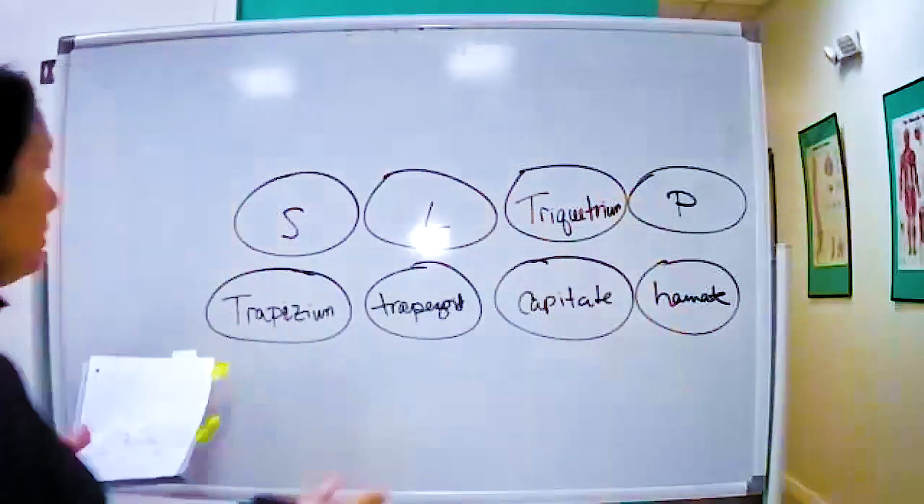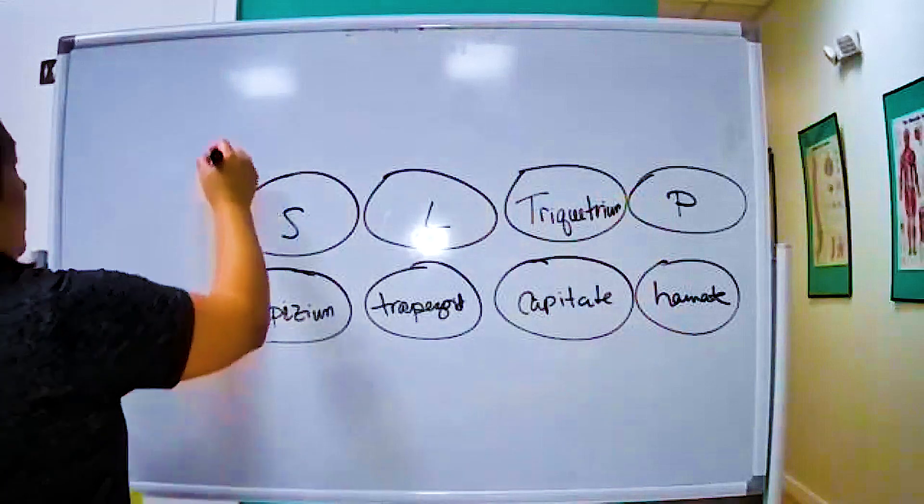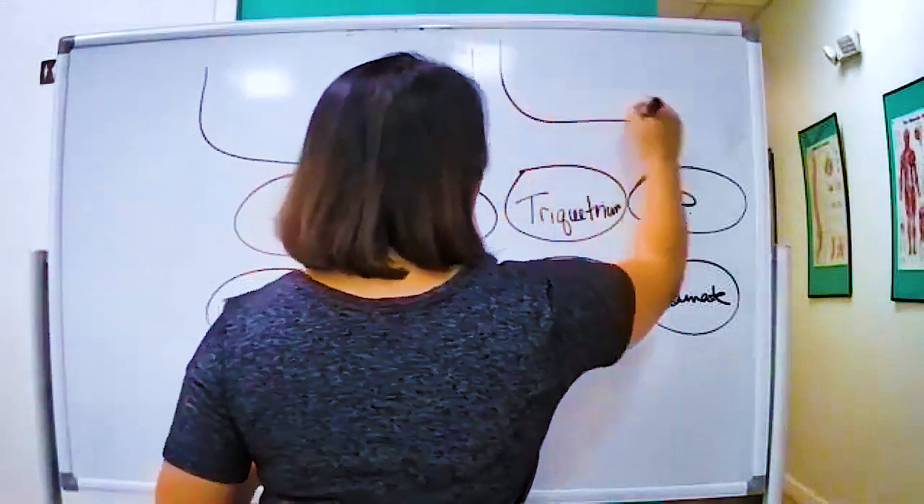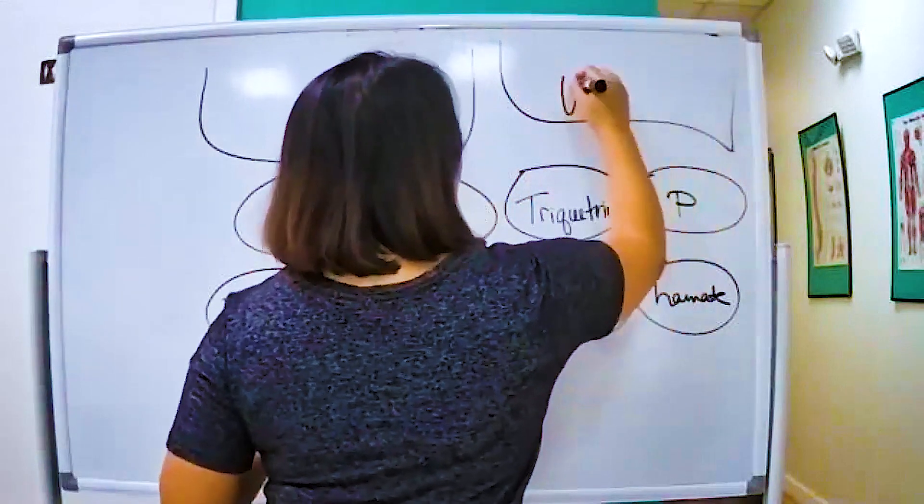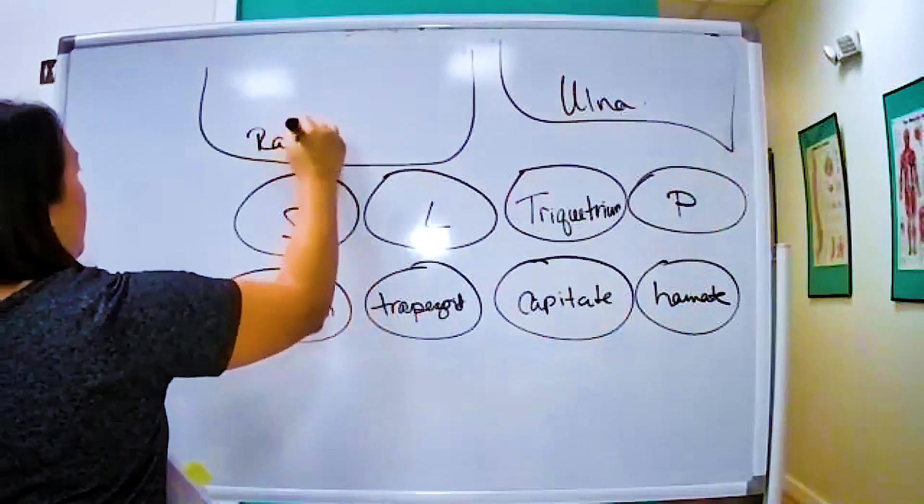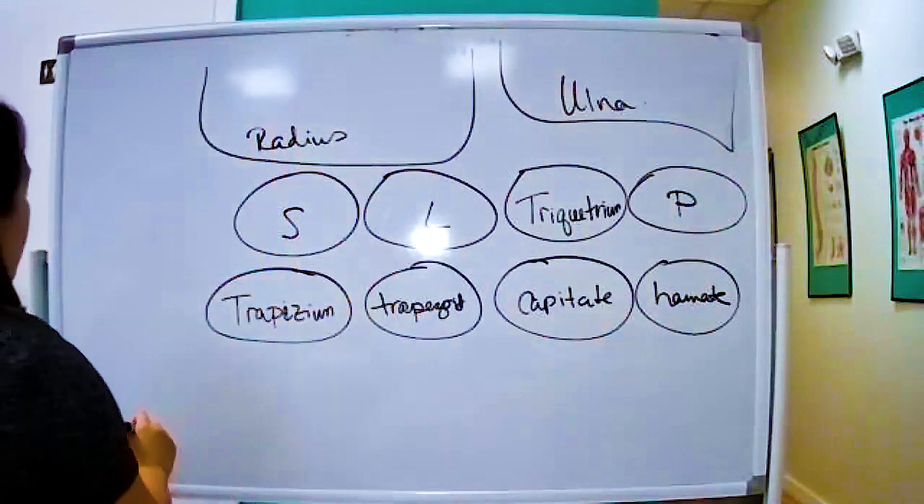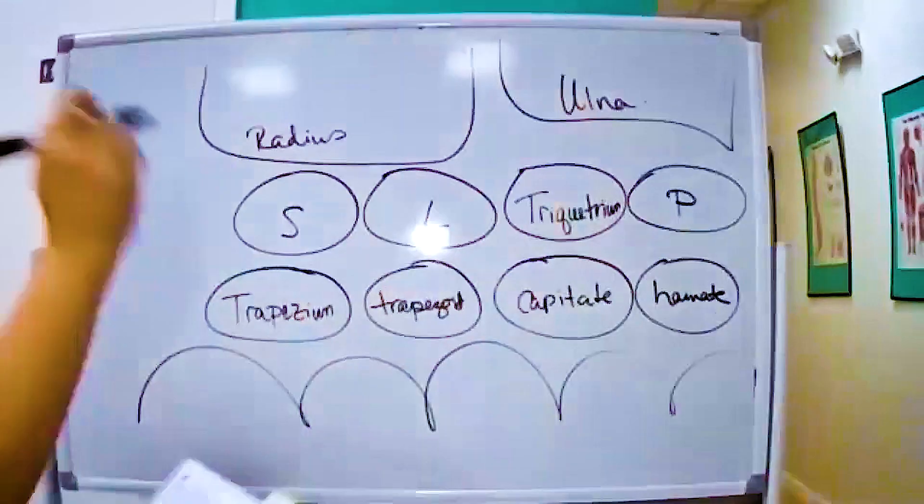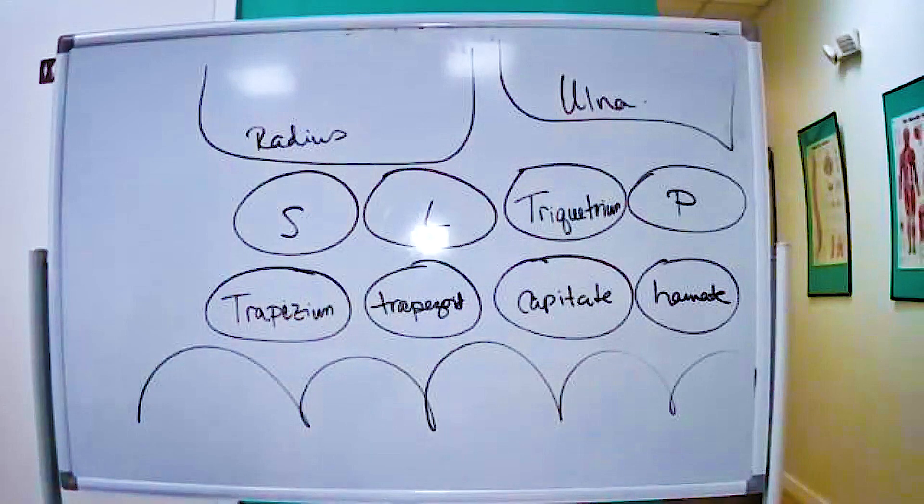After you draw that, you have to understand that the ulna sits here and the radius sits here. And this is how I draw my metacarpals: three, four, five. So it's really, really important to understand.